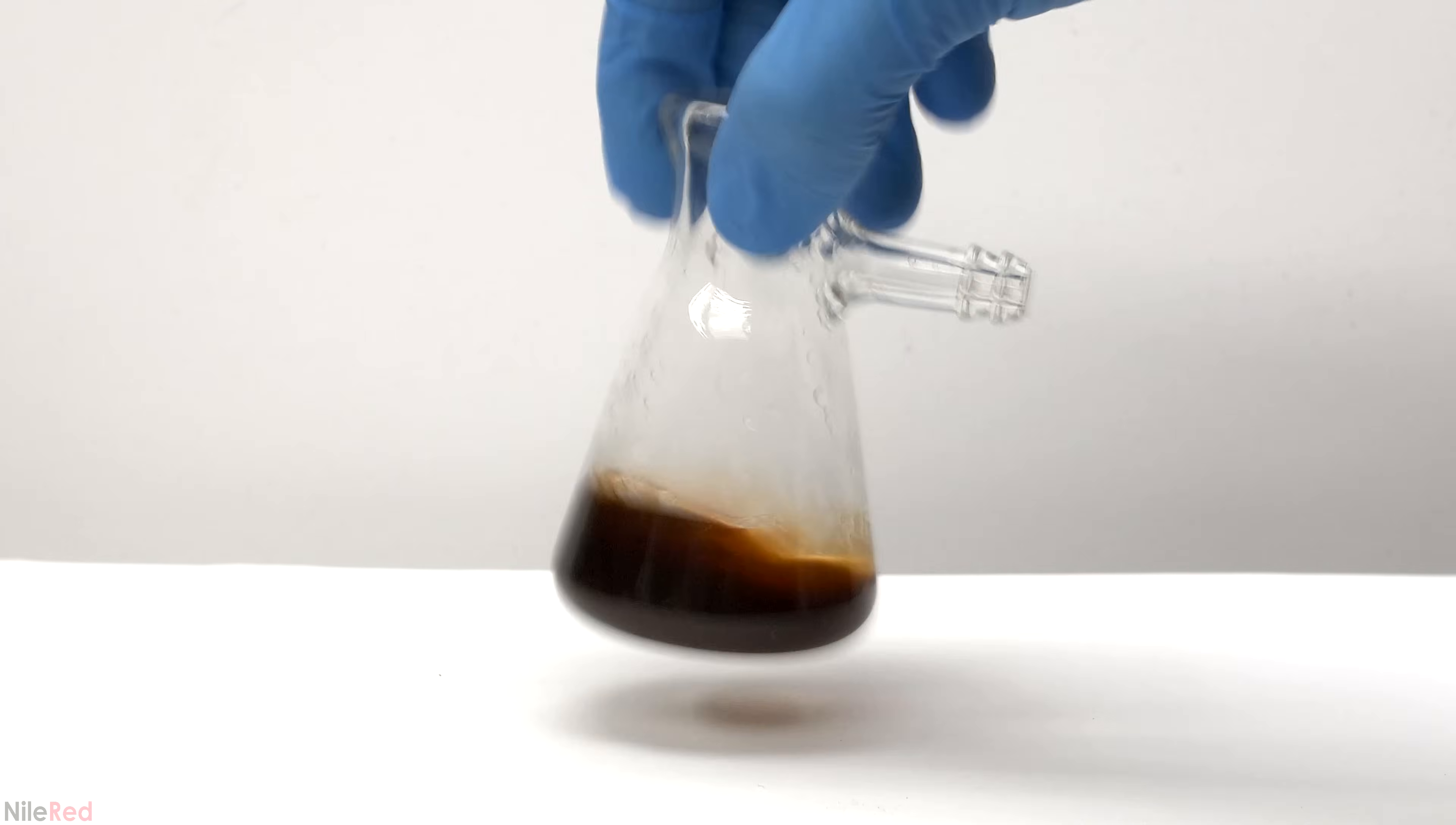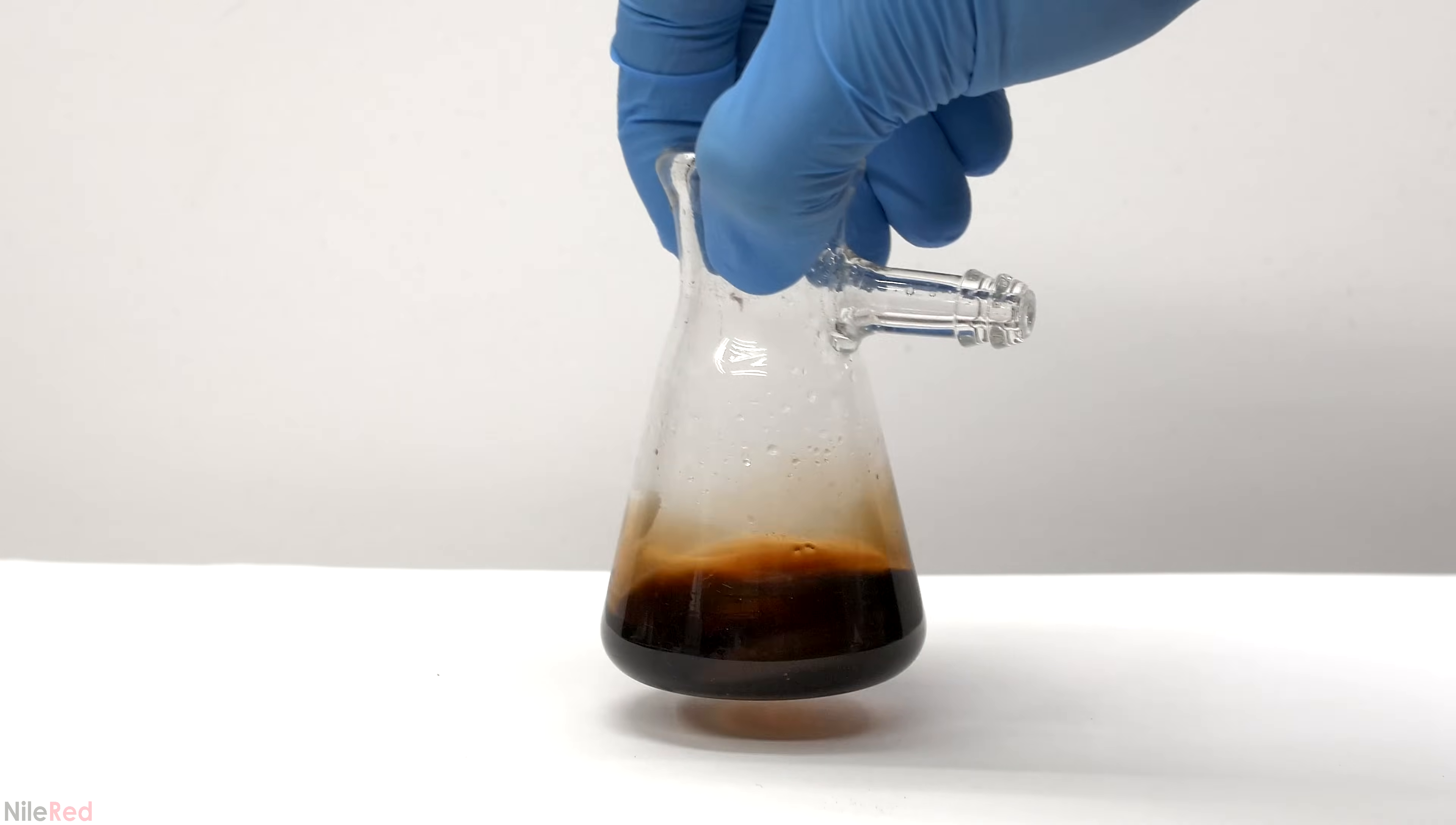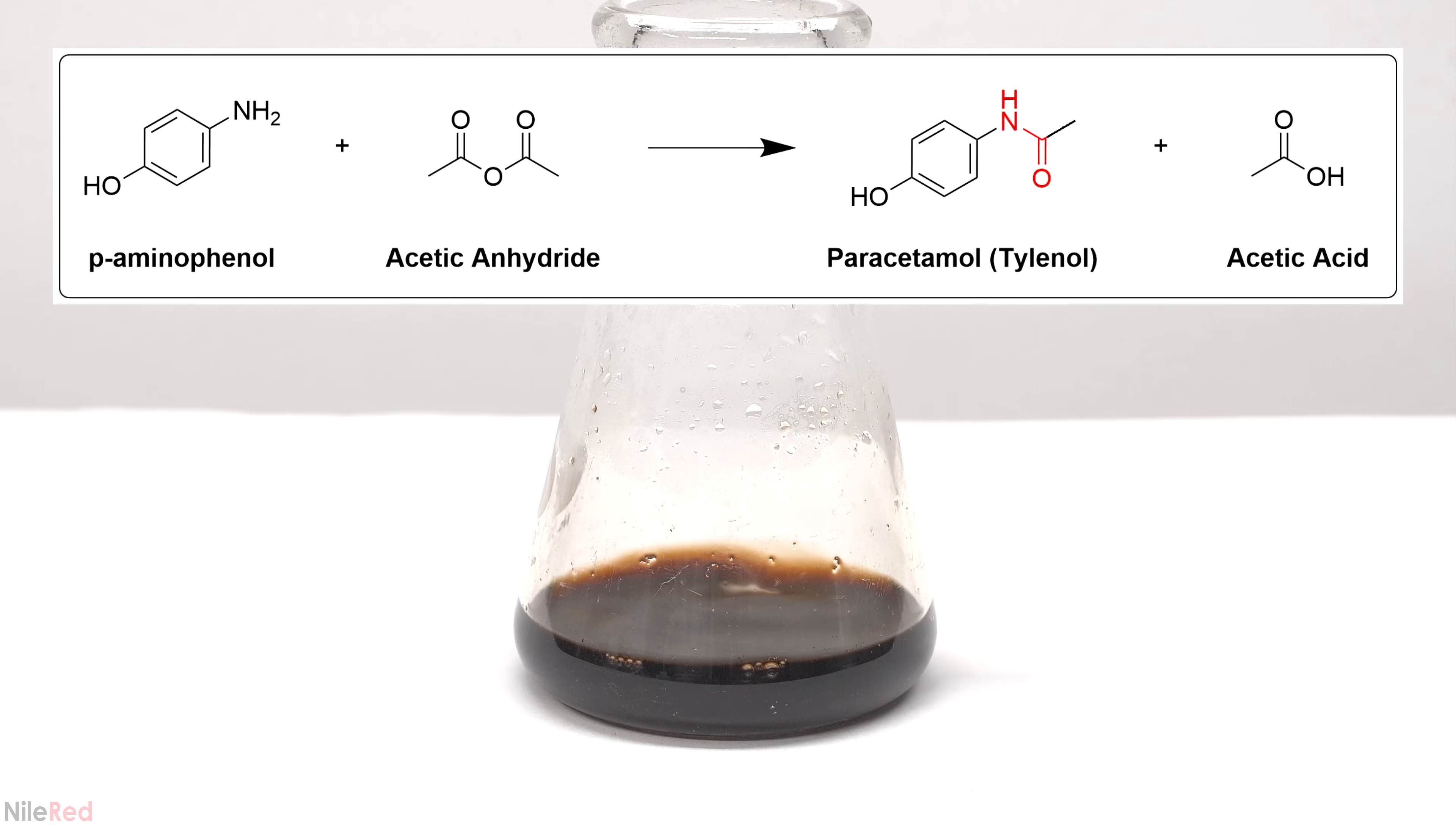I found that the stir bar wasn't doing a great job at mixing, so I decided to do it manually. The procedure said it would take about two minutes for a precipitate to form, but in my case it took about five. In this reaction, the p-aminophenol is being acetylated to form our final paracetamol.